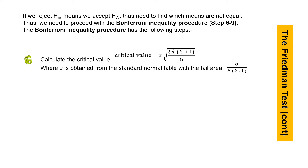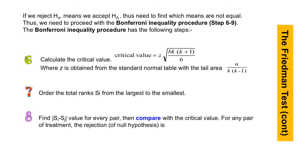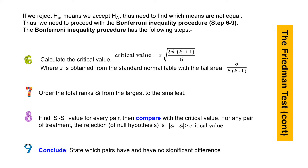Based on this formula we have to find what is the Z value from the standard normal table with the tail area of alpha divided by K multiplied by K minus 1. The seventh step is to order the total rank SI from the largest to the smallest value. Followed by the eighth step — to determine the difference between SI and SJ, and we compare the absolute value of the difference with the critical value solved in the sixth step. The rule of thumb is that we reject the null hypothesis if the absolute value of the difference is more than the critical value. The last step is to make conclusions, stating which pairs have significant difference and which pairs do not have significant difference.